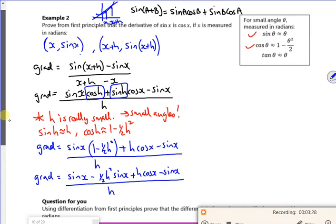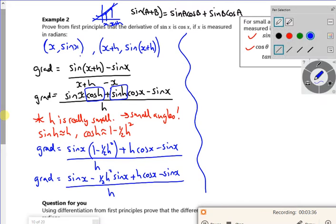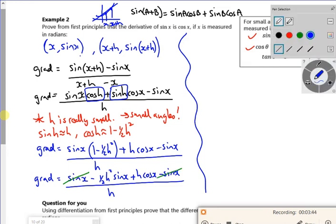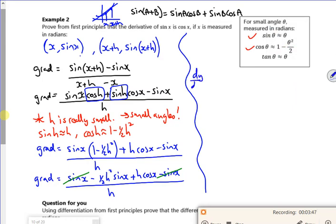Now, do you remember me telling you that when we did first principles last time round? There'll be a point where anything without h disappears. And if you look, it's done it again here. The sin x and the sin x is cancelled. So now I've got, well we've got, so I've got minus 1 half h squared sin x plus h cos x all over h. And that was my checking point, wasn't it?